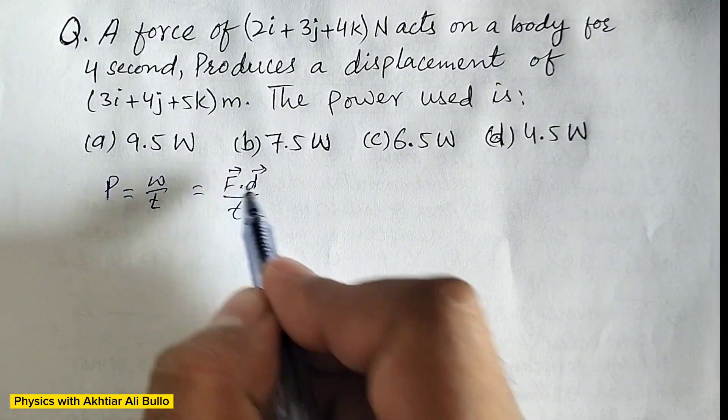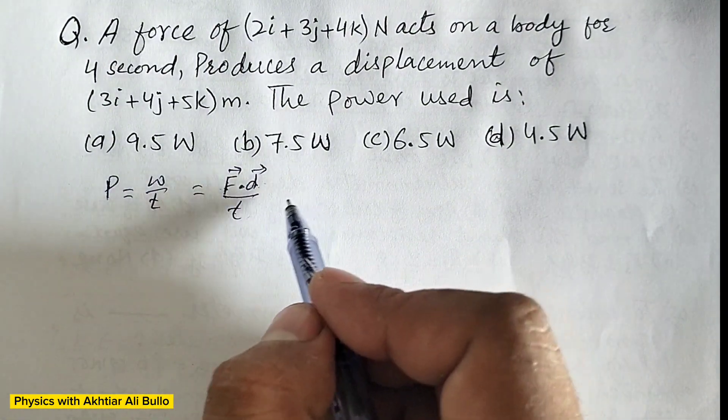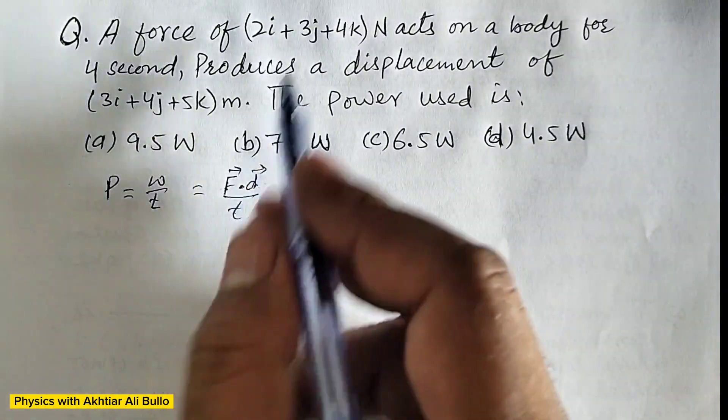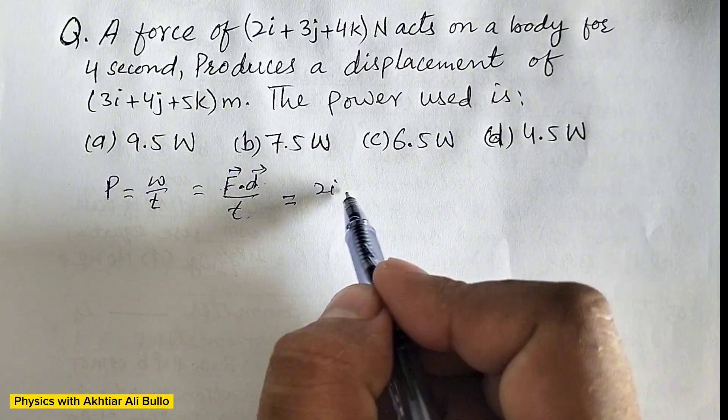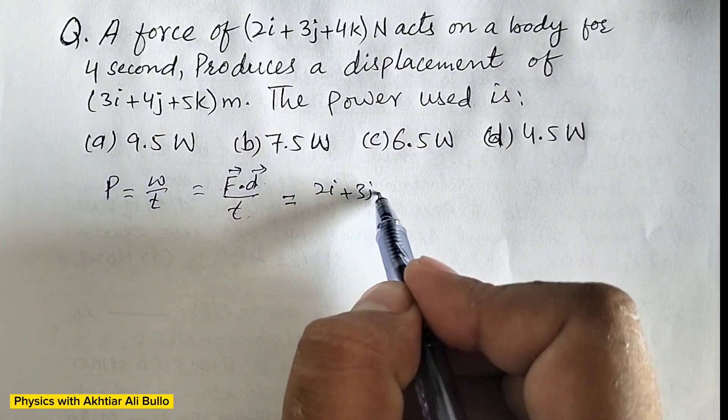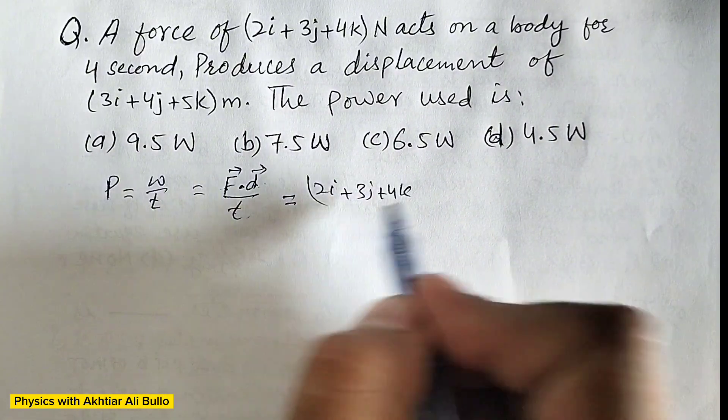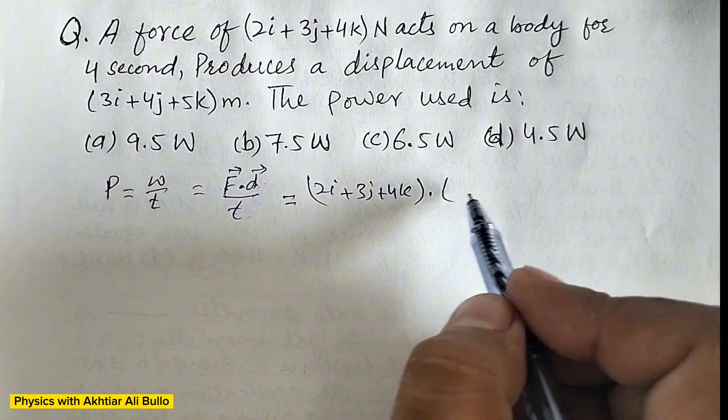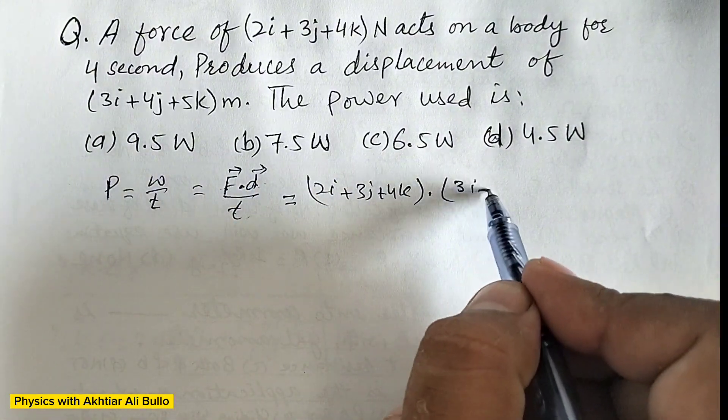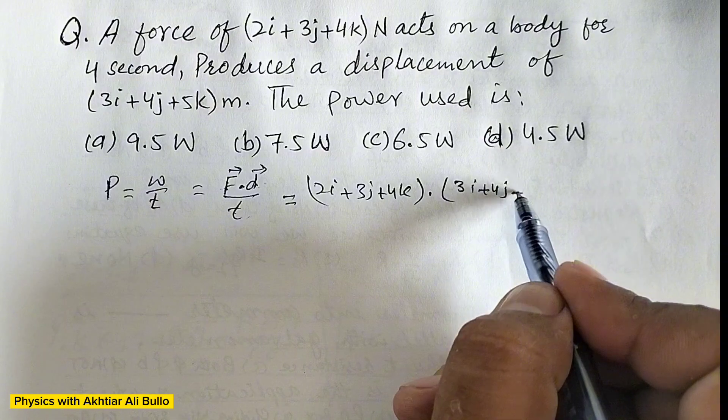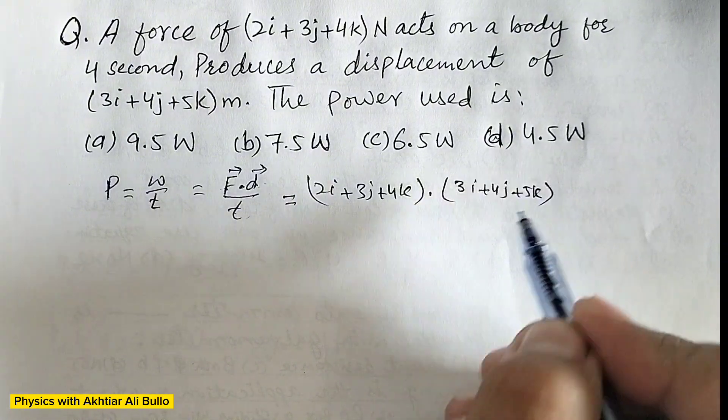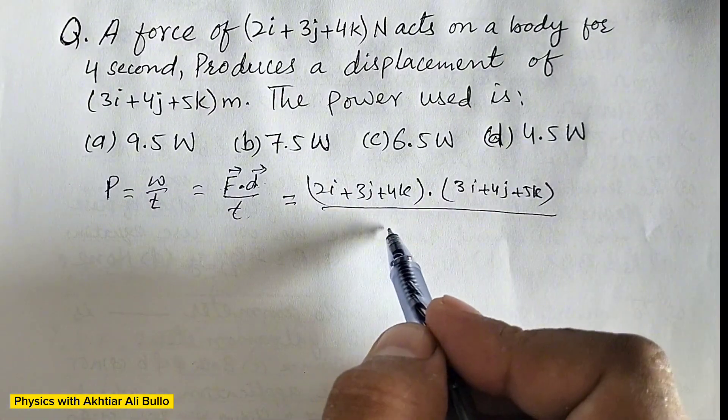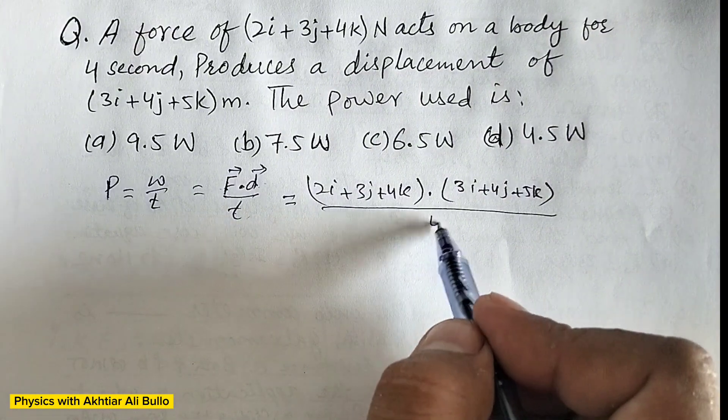So by putting the values, the value of force is 2i plus 3j plus 4k dot the value of displacement is 3i plus 4j plus 5k divided by t, as time is obtained as 4 seconds.